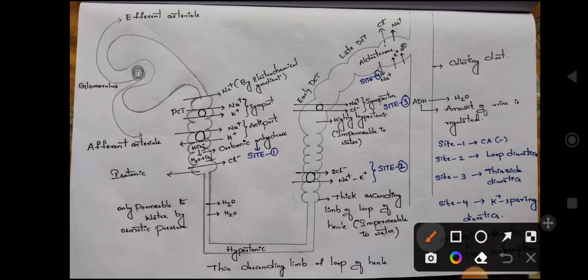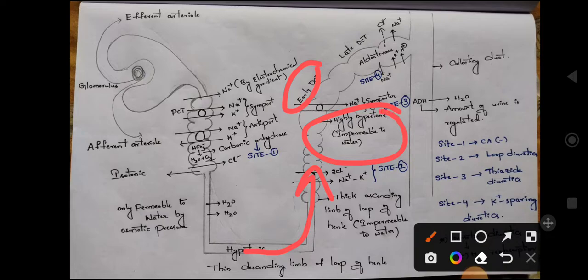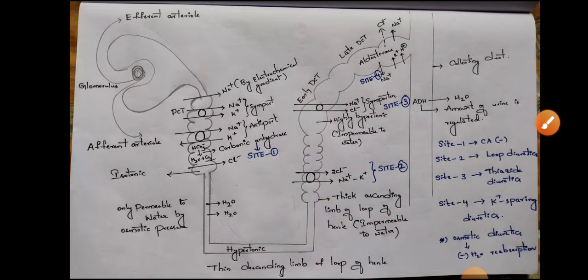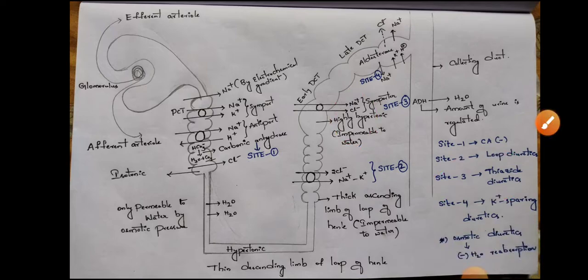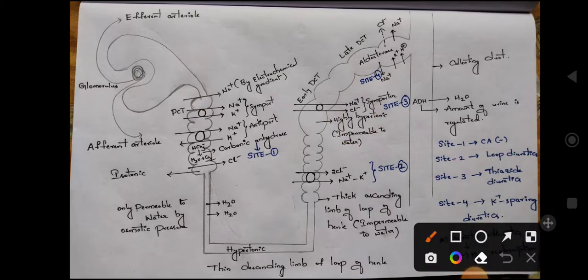After the thick ascending limb, the fluid becomes highly hypotonic and enters the early distal convoluted tubule. Here, similar to the thick ascending limb, only salts are reabsorbed — there is a symporter called the sodium-chloride symporter. Through this symporter, sodium ions and chloride ions are reabsorbed into the blood. The drugs that act on this site are the thiazide diuretics.